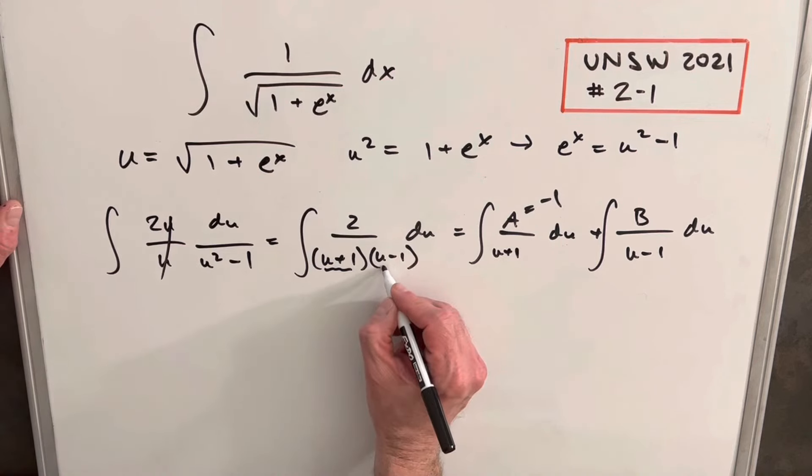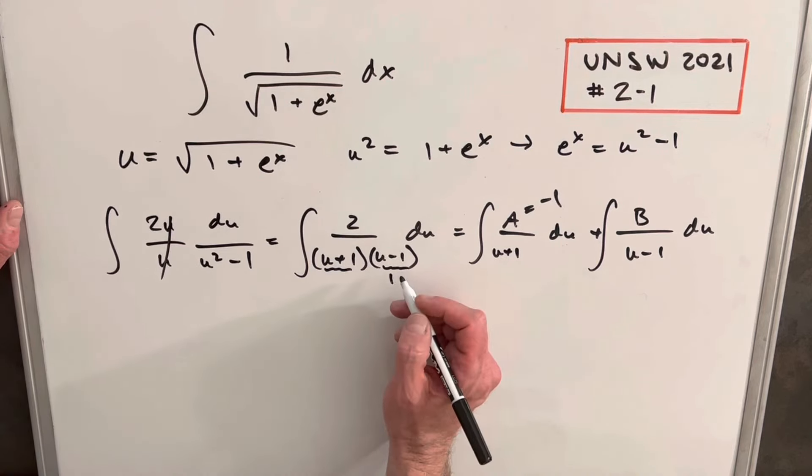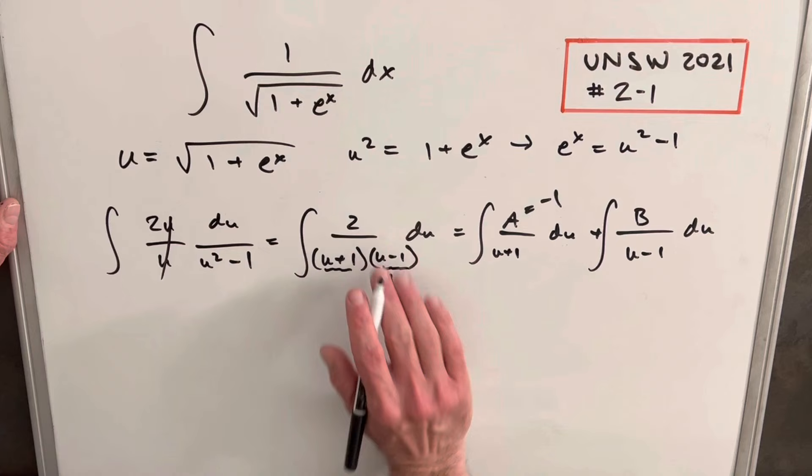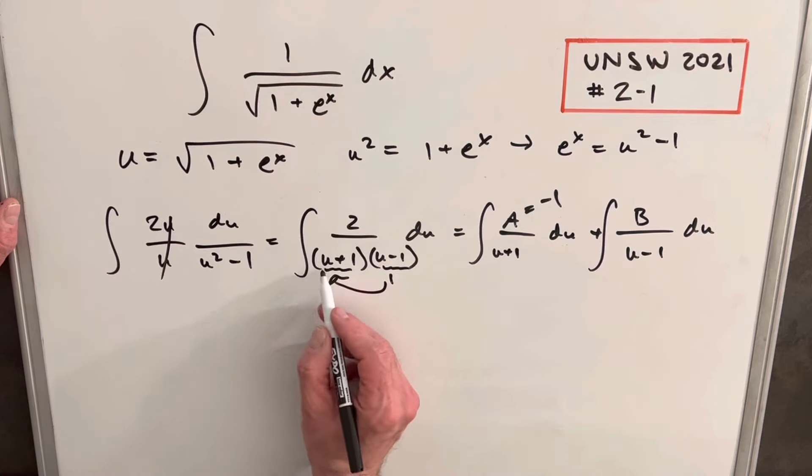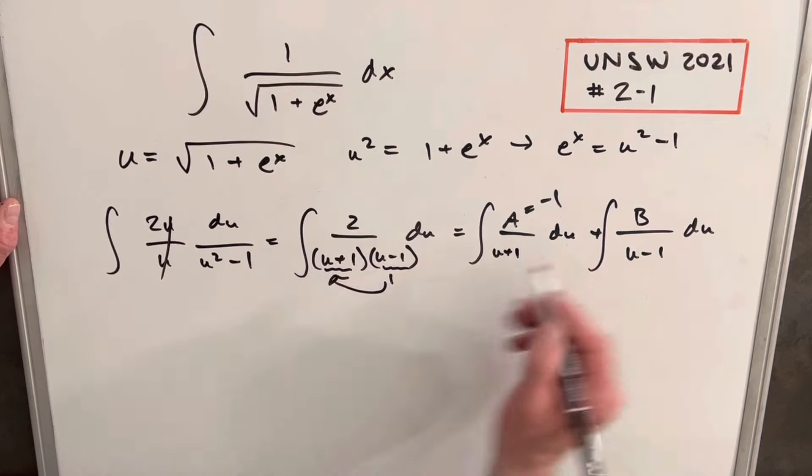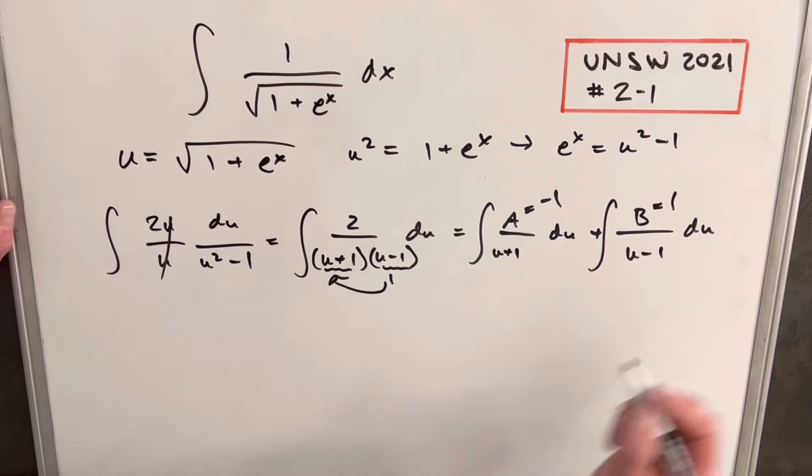Similarly for the other term, u equals 1 makes the (u minus 1) term zero. Plugging 1 into the remaining term gives us 2 over 2, which equals 1. So B equals 1.